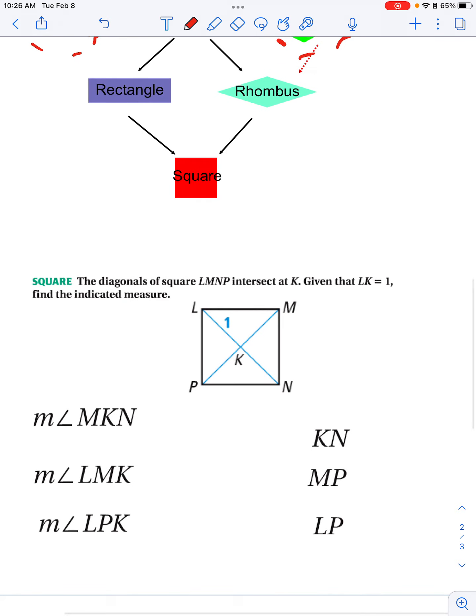So again, the rhombus or the rhombus has properties about the diagonals being congruent. So given that LK equals one, find the indicated measures. Let's see here, measure of angle MKN. So because again, these diagonals are going to intersect at a 90-degree angle, so this is going to equal 90 degrees.